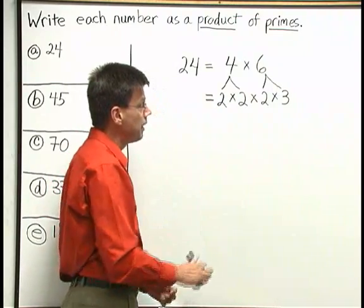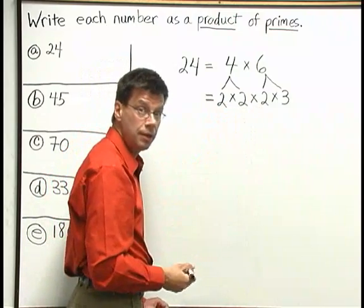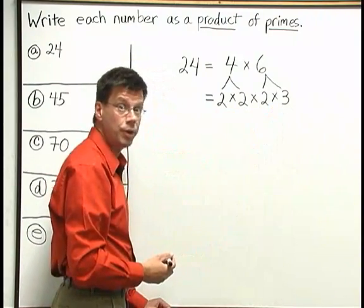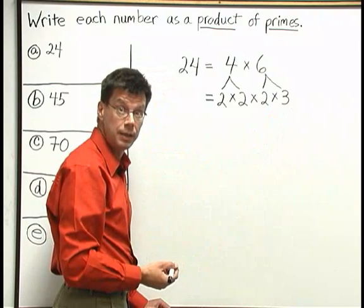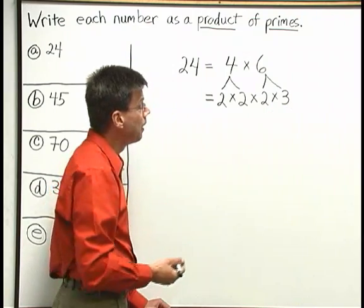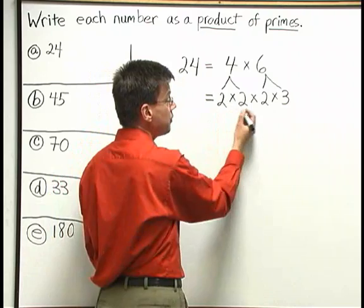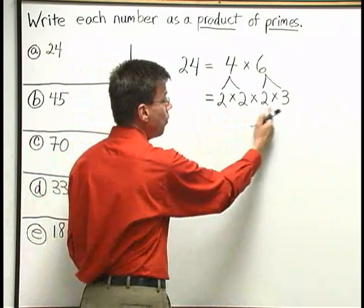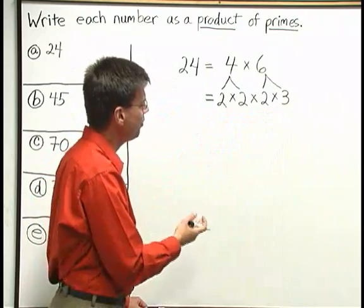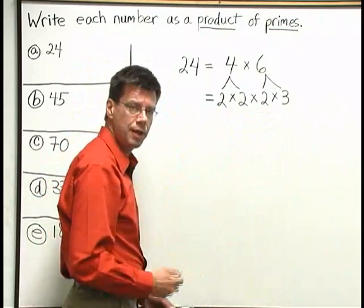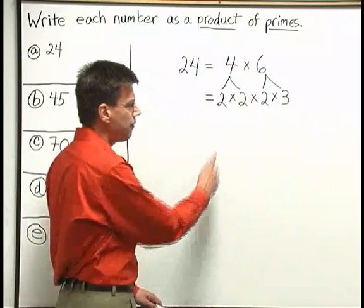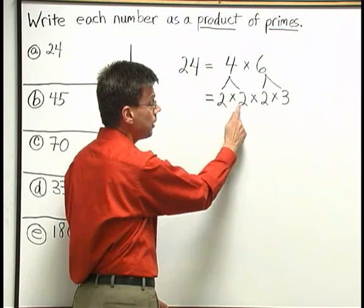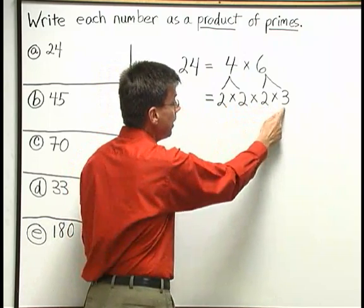2 is a prime number. As soon as we get to prime numbers in this process, we stop — we don't break them down further. 3 is also a prime number; the only way I can write that using multiplication would be as 1 times 3 or 3 times 1. So I stop here with these primes: 2 times 2 times 2 times 3. That's my answer — I've written 24 as a product of primes. If I multiply these numbers back together I get 24: 2 times 2 is 4, times another 2 is 8, times 3 is 24.